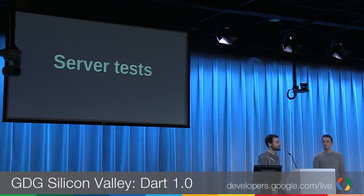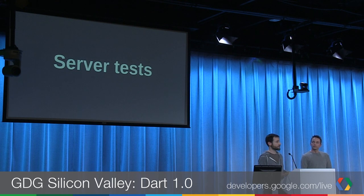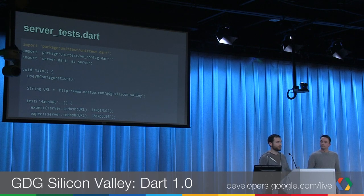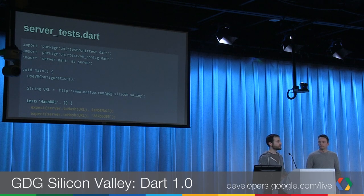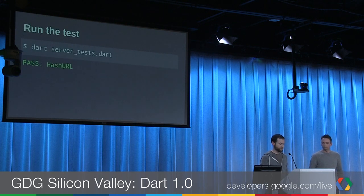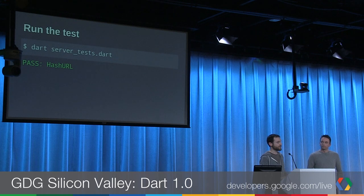Just like we tested the client, we're going to test the server as well. What's great about running the same code on server and client is that things feel very familiar. We pull in the unit test library. Since we're not testing HTML, we use the virtual machine in this instance. To test the hash is working properly, we first check it's returning something — not null — and then verify the specific expected hash. To run it, you just type 'dart' followed by your test file name on the command line, and you can see whether it passes or fails.